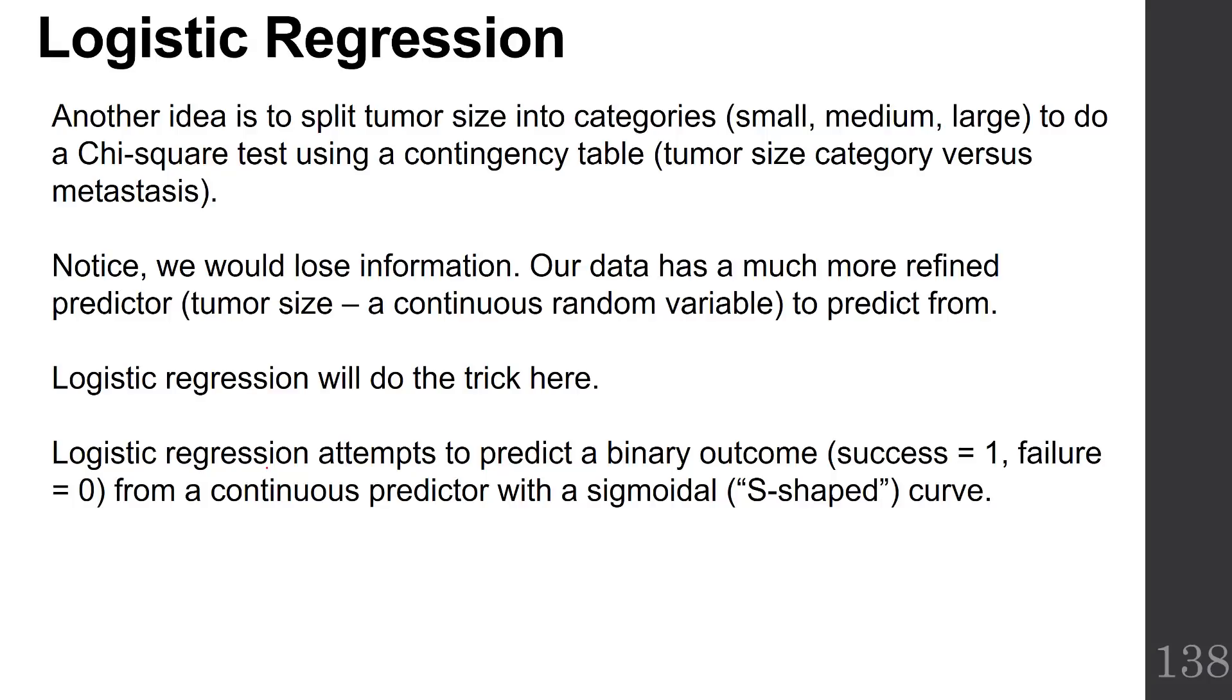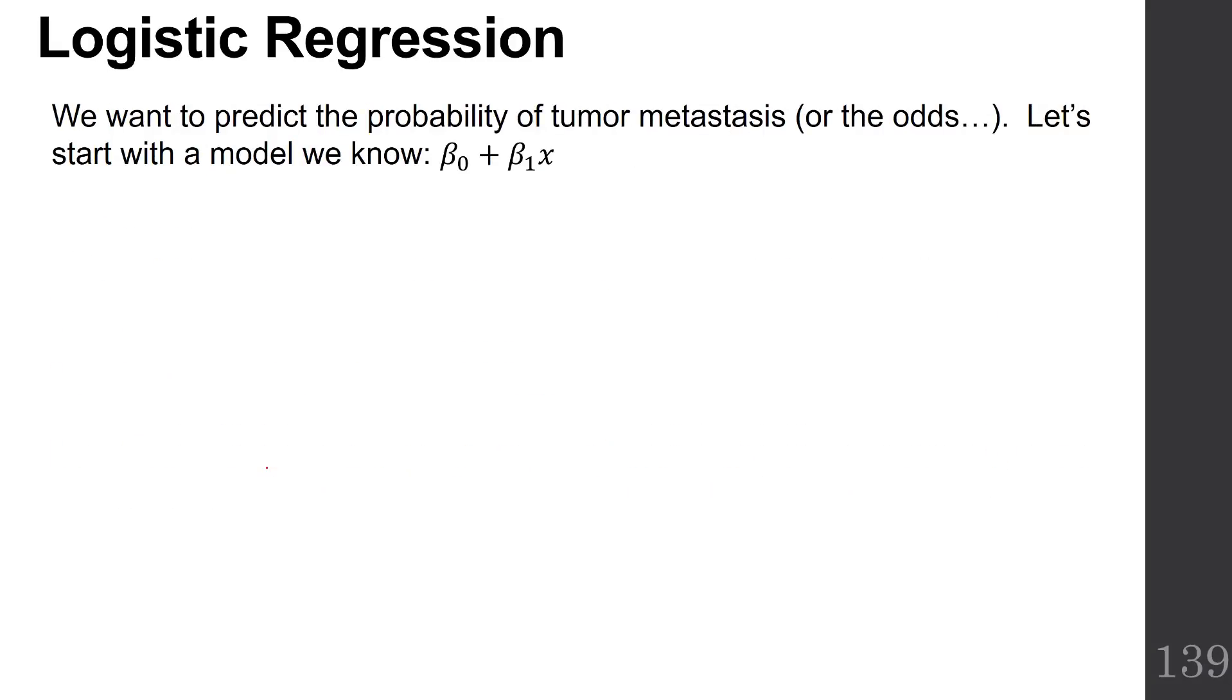Logistic regression is going to predict our binary outcome, success equals 1, failure equals 0, from a continuous predictor with a sigmoidal, otherwise known as an S-shaped curve. So we want to predict the probability of tumor metastasis, or the odds.